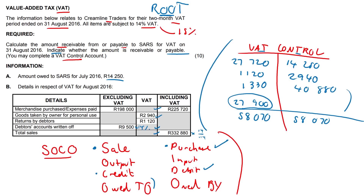It's an easy section. Remember SOCO. And if it's not as clear cut — like when they tell you something has been purchased or there's been a sale — sometimes you've got to go back to the root transaction. But you can do it. I believe in you.